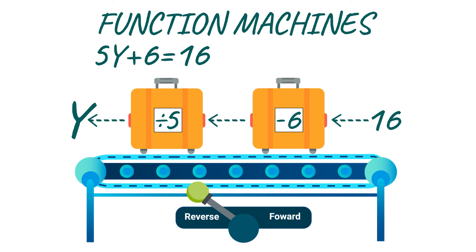So we have 16 minus 6 divided by 5. What's the answer? Yes, you got it! Y must be 2.